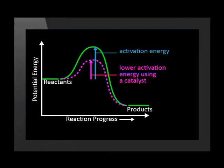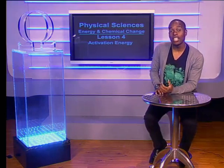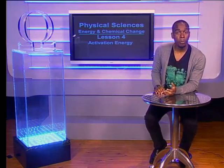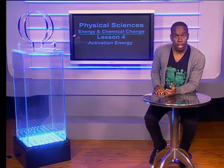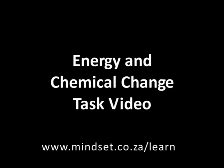We can represent this reaction on an energy diagram. The green curve represents the reaction using a catalyst; the red curve is without a catalyst. Remember that the catalyst lowers the activation energy of the reaction, so that the reaction takes place faster. This brings us to the end of our series on energy and chemical change. Be sure to practice some questions from the task video to prepare you for the tests and exams. You can also look at the Mindset website at www.mindset.co.za/learn. Goodbye.